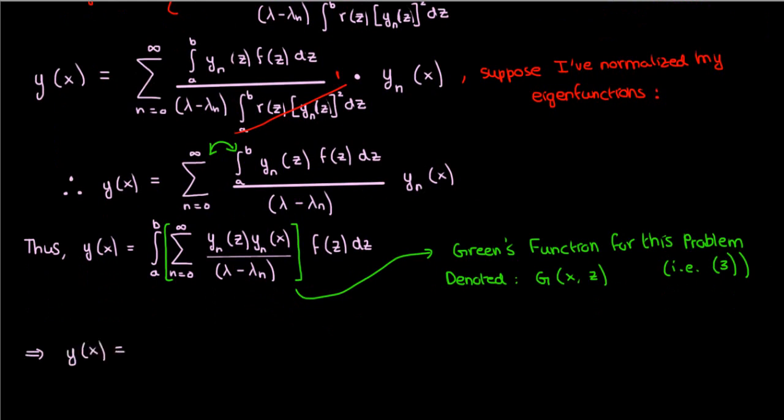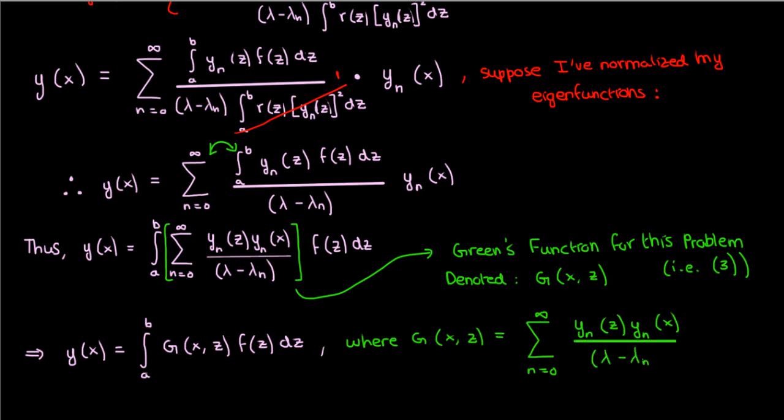If we then express everything in terms of this Green's function, we'll find that the solution y is the integral from a to b of our Green's function times f of z dz, where the Green's function g is the sum from n equals 0 to infinity of y sub n of z times y sub n of x over lambda minus lambda n.